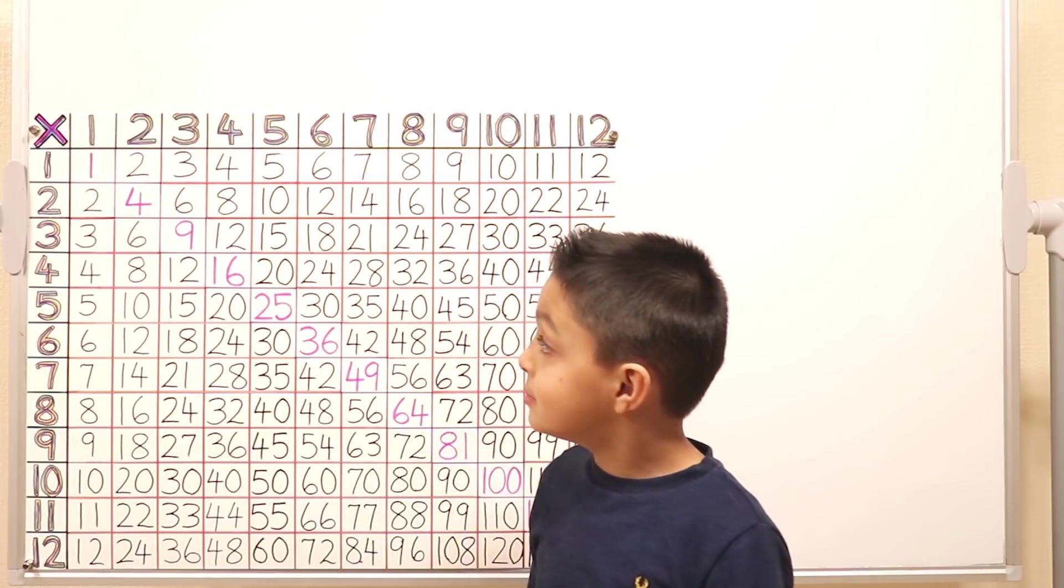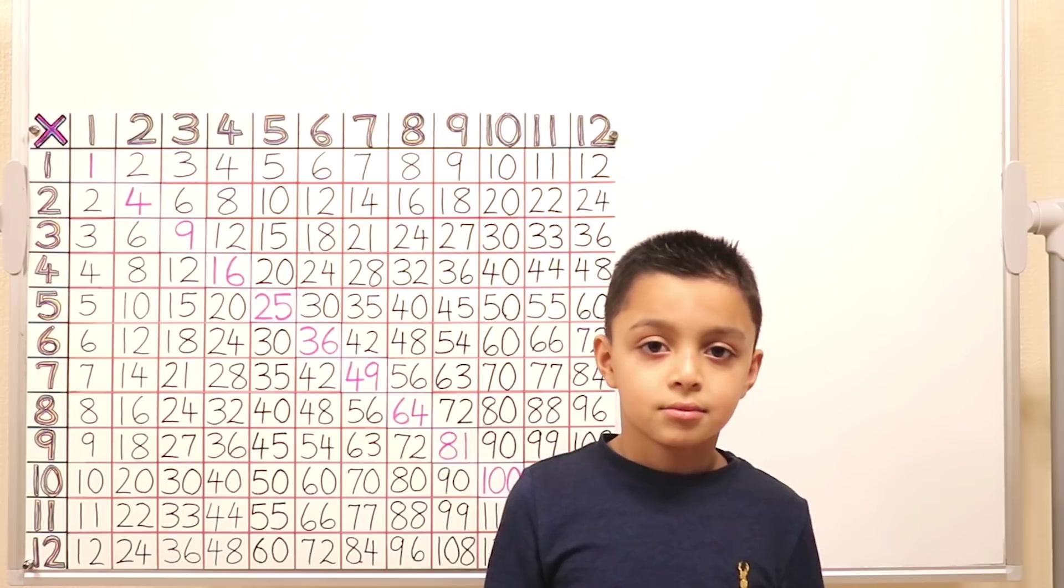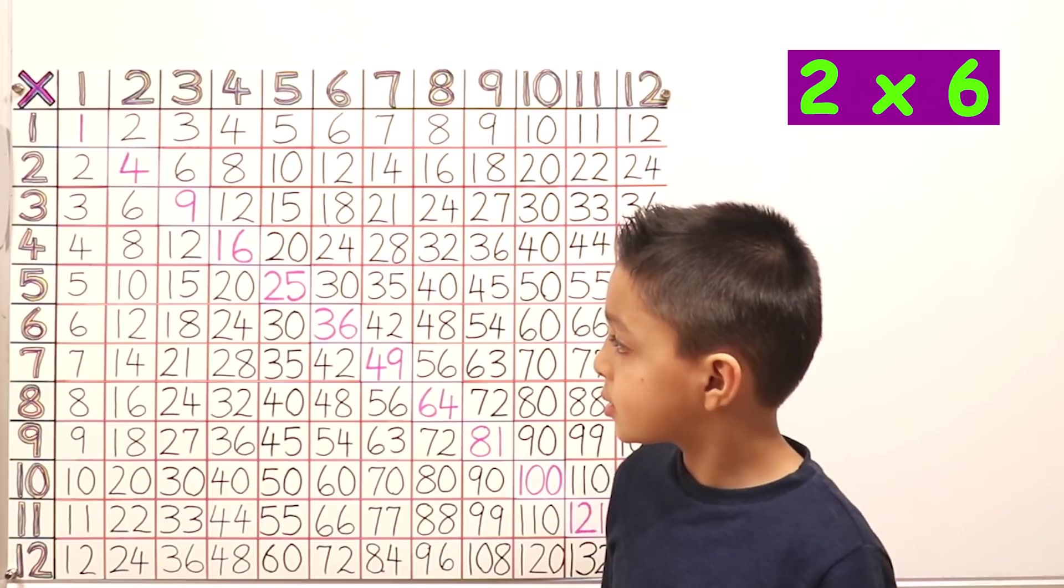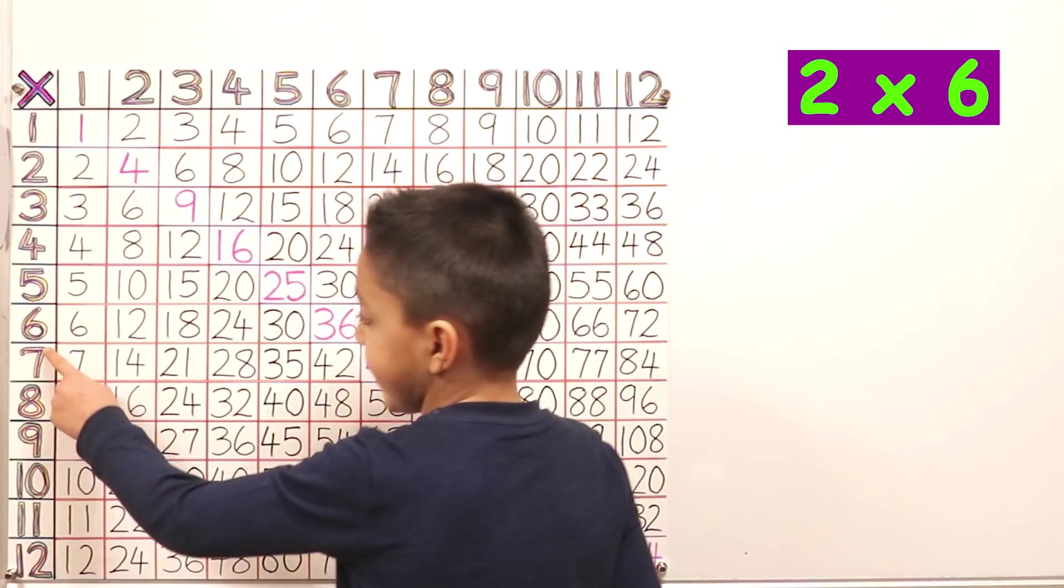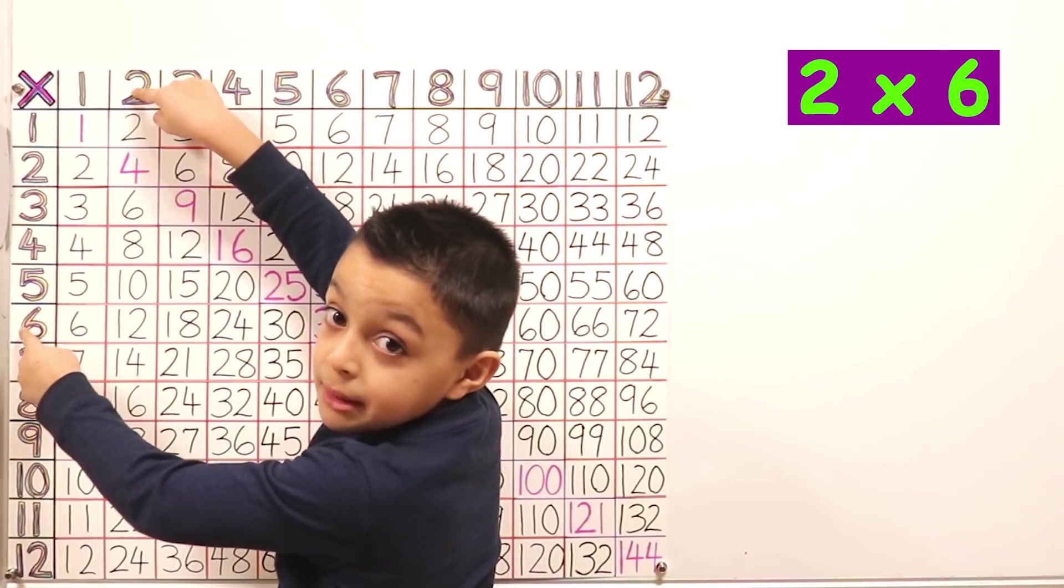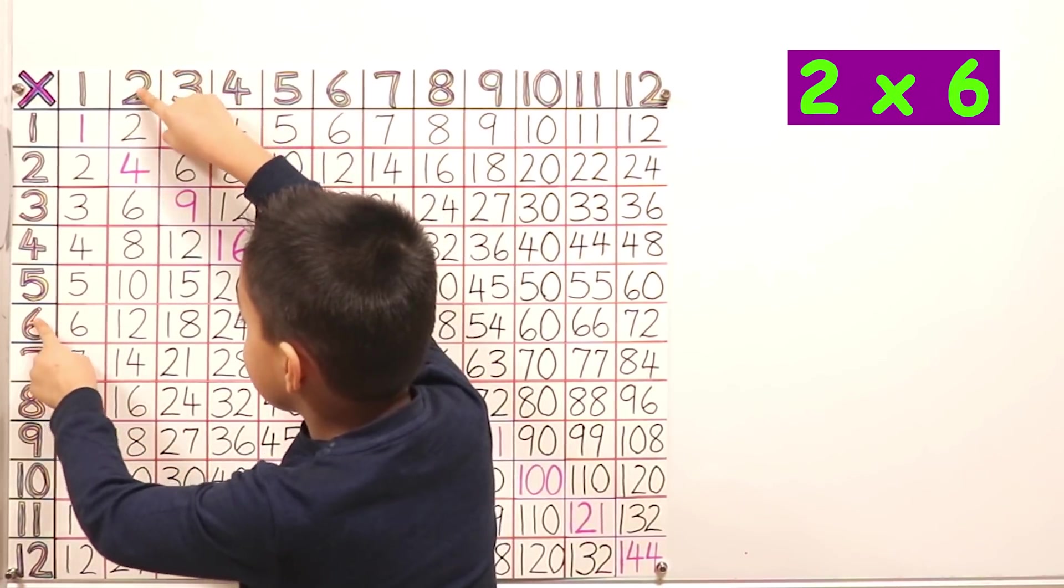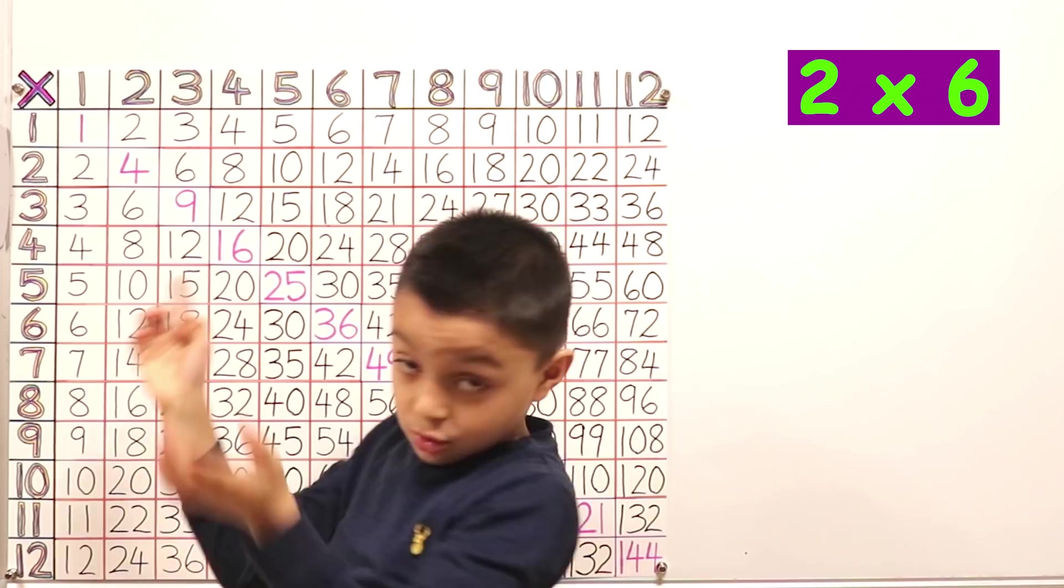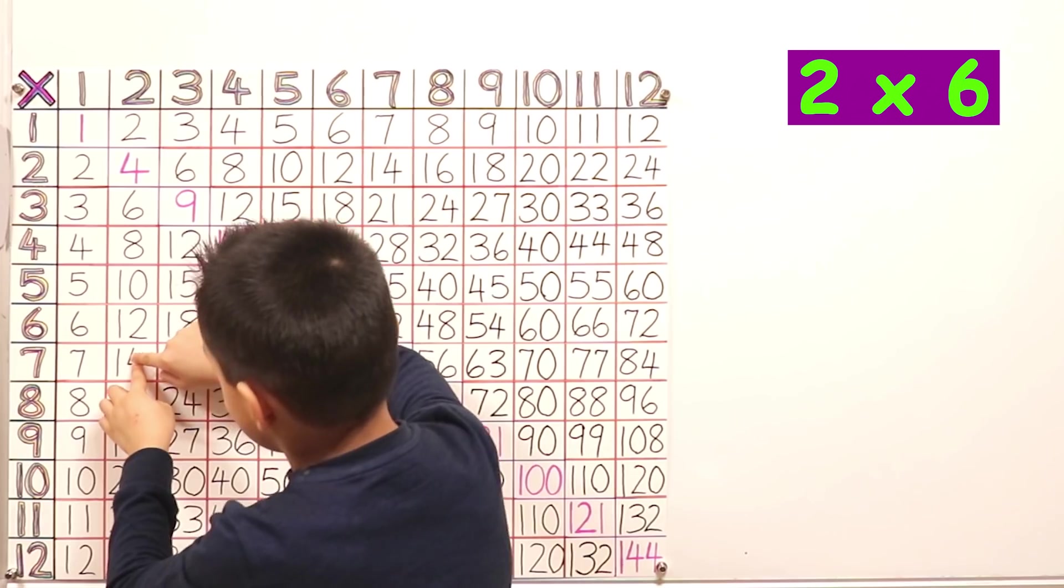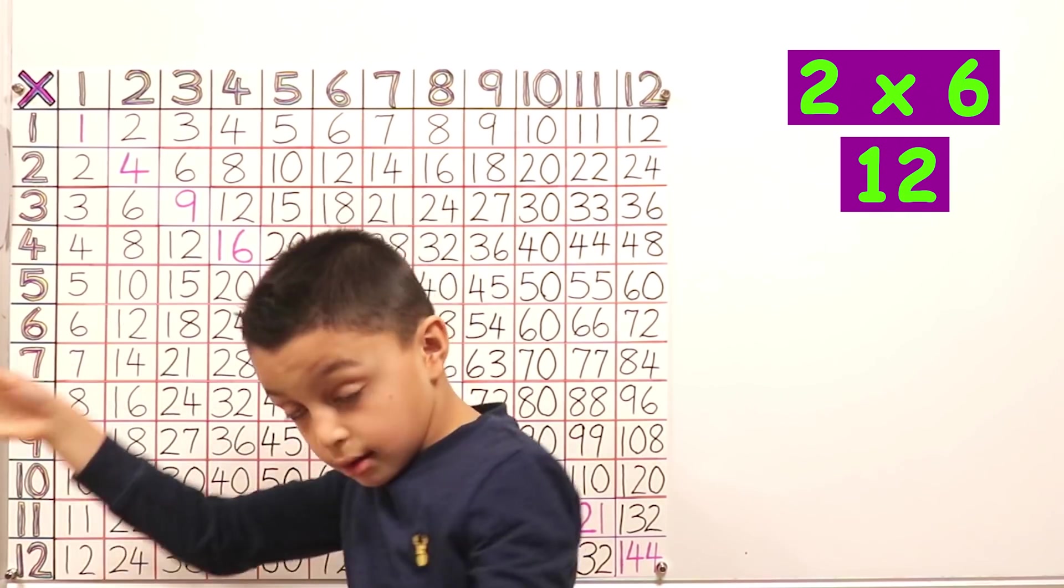Okay, well let's show everyone at home how it works. How would you work out two times six? So I want you to find the six timetables. Yes. And? And then I go to my two timetables. And then where do they meet? At twelve. So two times six. So you find the six and you go to the two. So two times six is twelve. Yes.